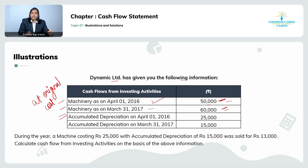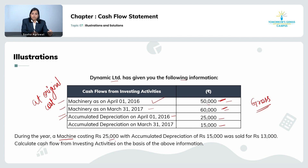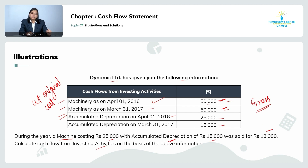So 50,000 and 60,000 are not net of depreciation — they are the gross values. Accumulated depreciation as on 1st April 2016 is 25,000 and accumulated depreciation as on 31st March 2017 is 15,000. During the year, a machine costing 25,000 — with accumulated depreciation of 15,000 charged till date — was sold for 13,000. We need to calculate cash flow from investing activity.